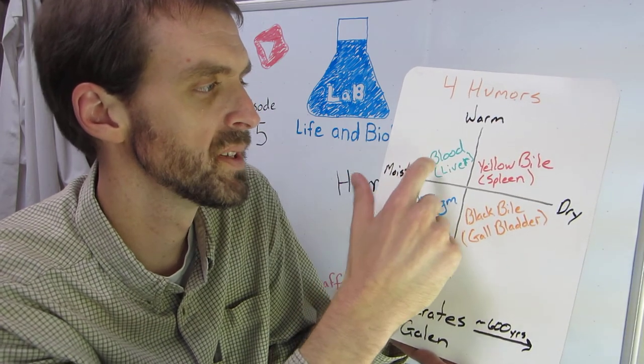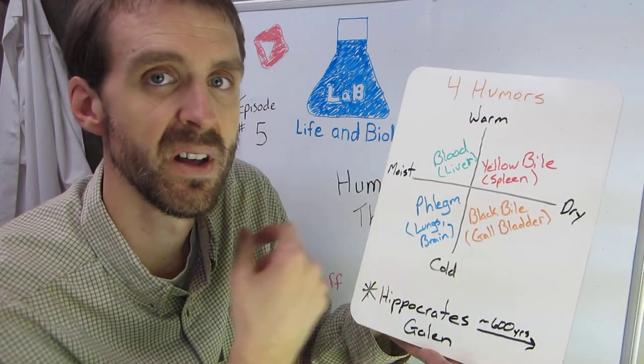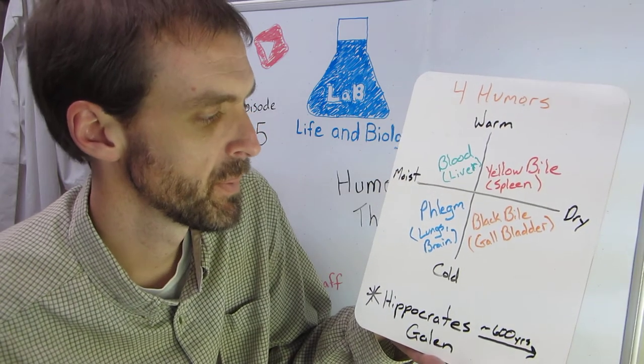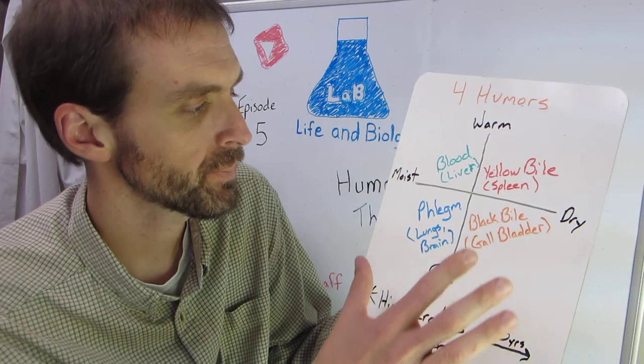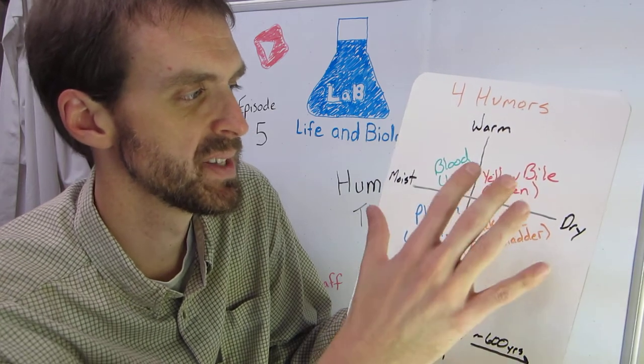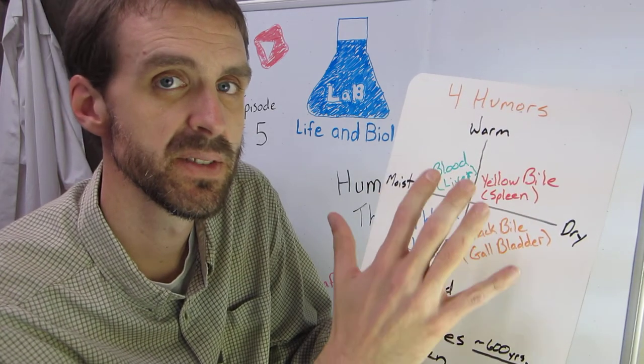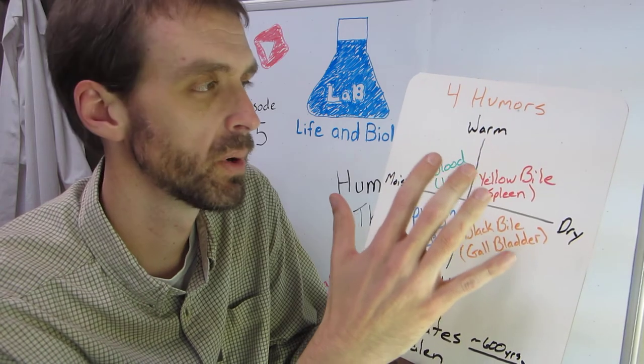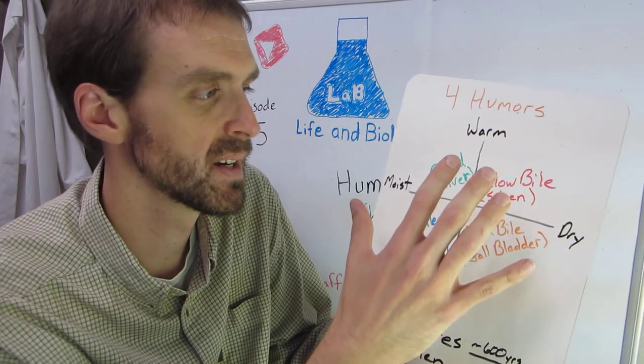And moist and warm is blood. And it was thought that all the blood came from the liver at that time. And so what Hippocrates suggested was that an imbalance between these four humors, these four vital liquids, is what caused sickness.